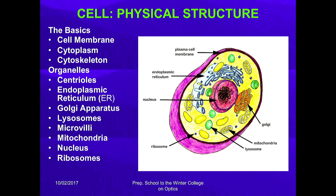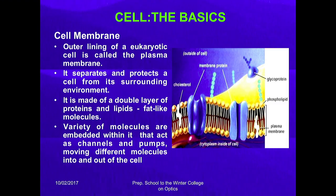An animal cell contains the plasma membrane, endoplasmic reticulum, nucleus, ribosomes, lysosomes, mitochondria, and Golgi apparatus. The basic components are the cell membrane, cytoplasm, and cytoskeleton, along with various organelles. The cell membrane is the outer lining of eukaryotic cells — the plasma membrane — which separates and protects a cell from its surrounding environment. It is made of a double layer of proteins and lipids, including membrane proteins and cholesterol. Various molecules embedded within it act as channels and pumps, moving different molecules into and out of the cell.